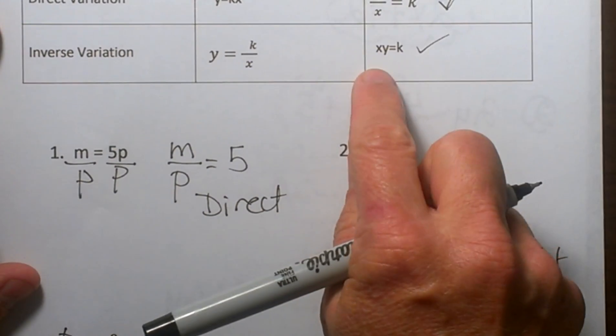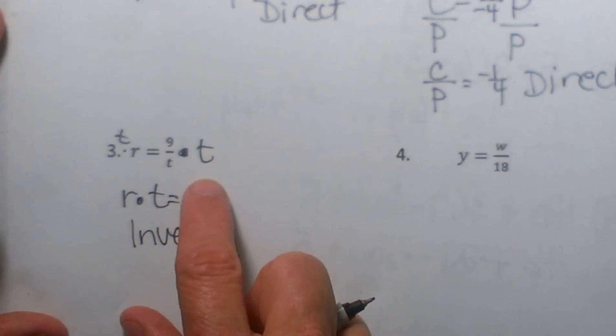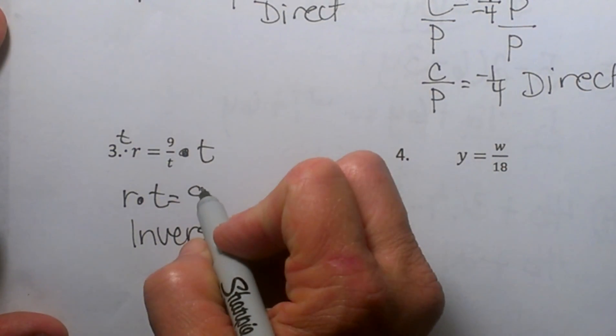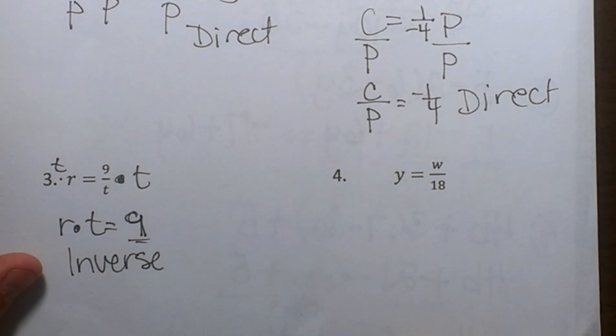When I get the variables on both sides and we are multiplying to get to our constant, in this equation our constant is 9. So you can see k is 9 in this equation. Now let's look at one more.